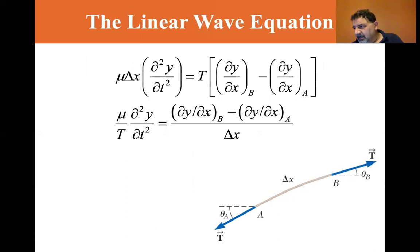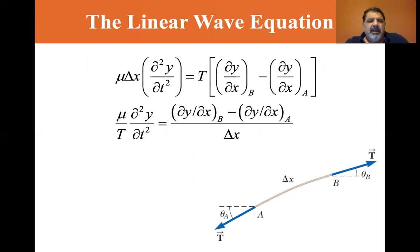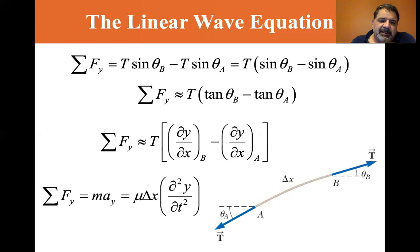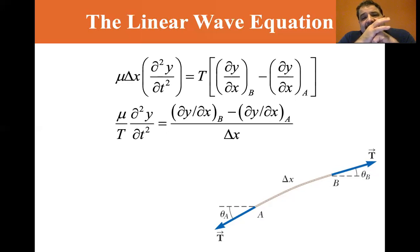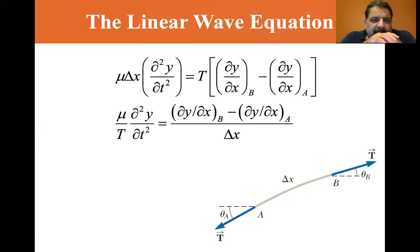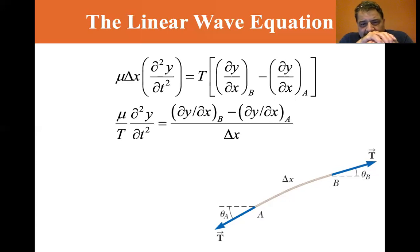If we combine the equations, we get μΔx times the second partial derivative of y with respect to t, equal to the tension T times (∂y/∂x)_B minus (∂y/∂x)_A. Rearranging, we get (μ/T) times the second partial of y with respect to t equals [(∂y/∂x)_B minus (∂y/∂x)_A] divided by Δx.